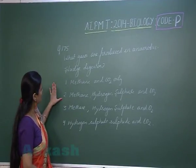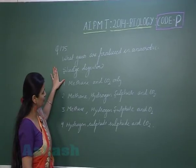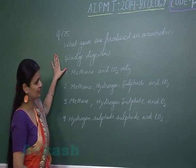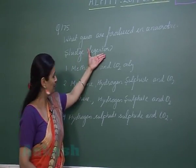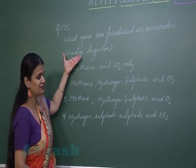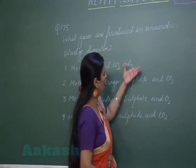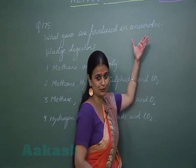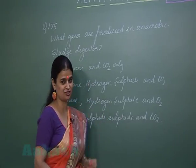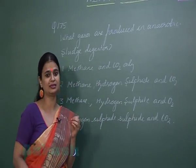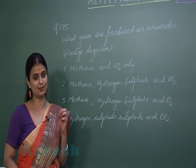In question number 175, we have to see which gases are produced in an anaerobic sludge digester. This digester is involved in the breakdown and digestion of activated sludge, and this is done with the help of anaerobic microbes. The anaerobic microbes which can perform sludge digestion are methanogens — that is one category which is involved.